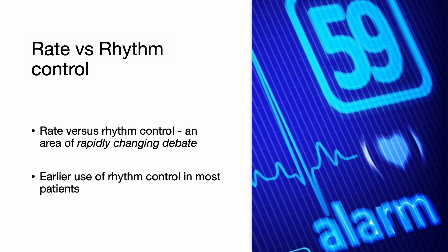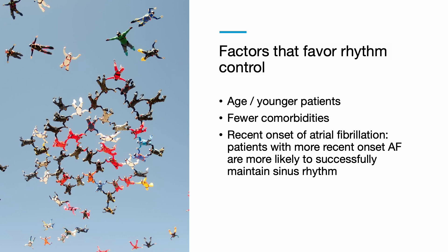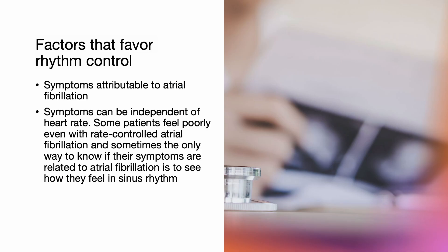Rate versus rhythm control in atrial fibrillation is an area of rapidly changing debate. In general, there is a current movement towards broader and earlier use of rhythm control in most patients. Factors that favor rhythm control include younger age, fewer comorbidities, and more recent onset atrial fibrillation, since these patients are more likely to successfully maintain sinus rhythm. Some patients feel poorly even with rate-controlled atrial fibrillation, and sometimes the only way to know if symptoms are related to atrial fibrillation is to see how they feel when the rhythm converts to normal sinus rhythm.